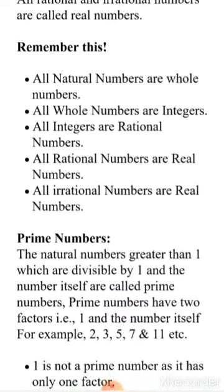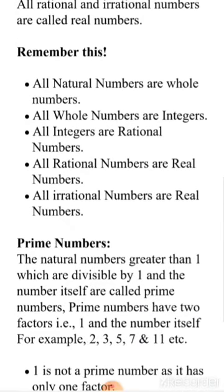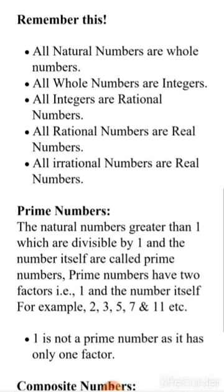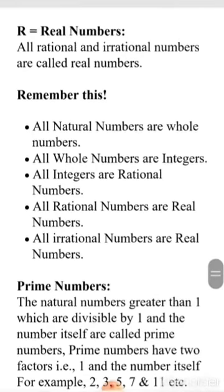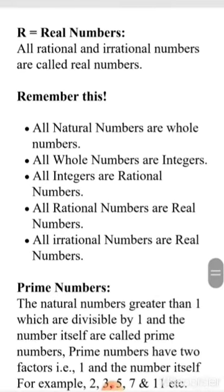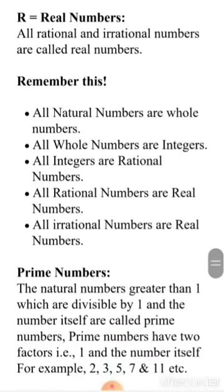Now, what are Real Numbers — the topic of the day? All rational and irrational numbers together are called real numbers. In simple language, a real number is like a box — that box contains both rational numbers and irrational numbers. So a box containing both will be called a box of real numbers.